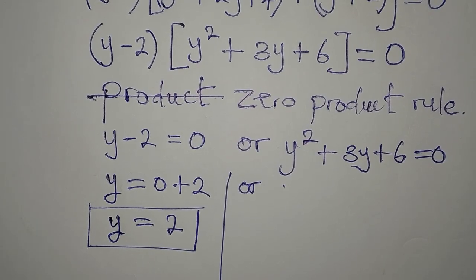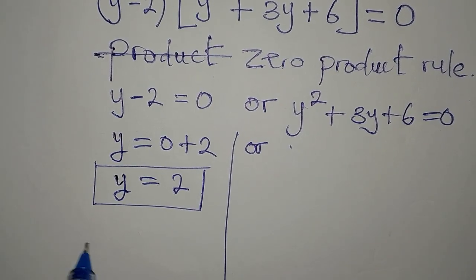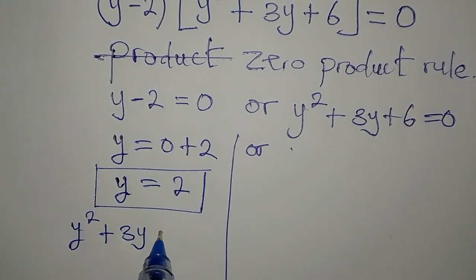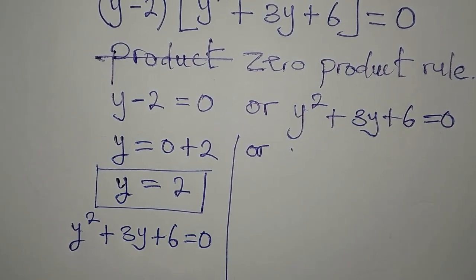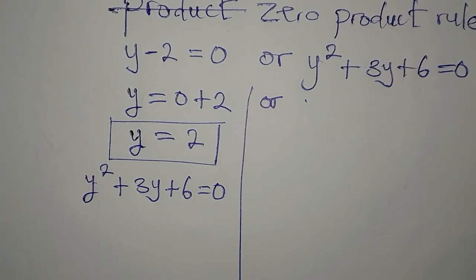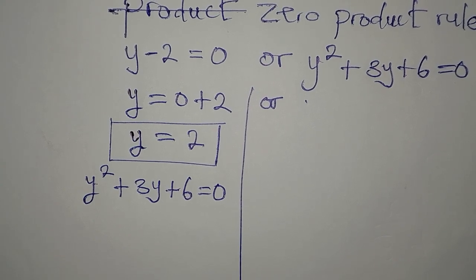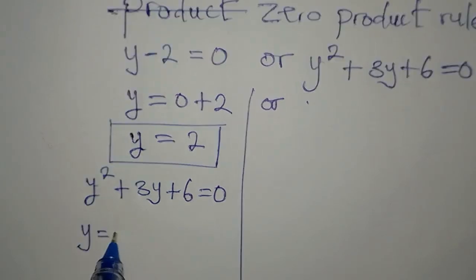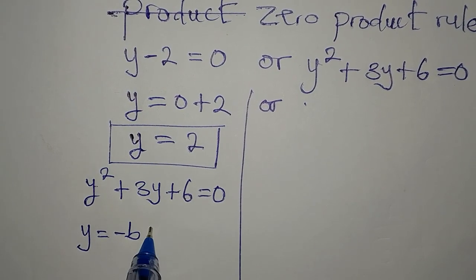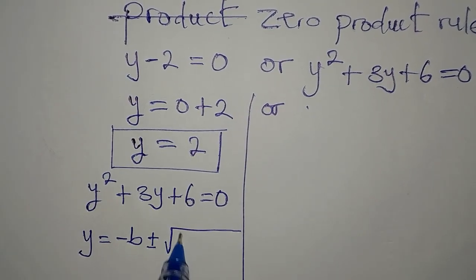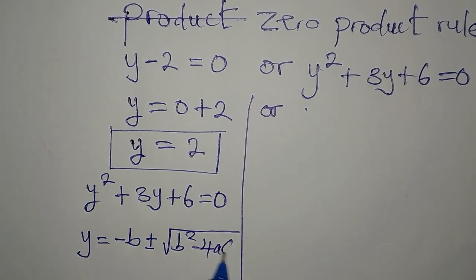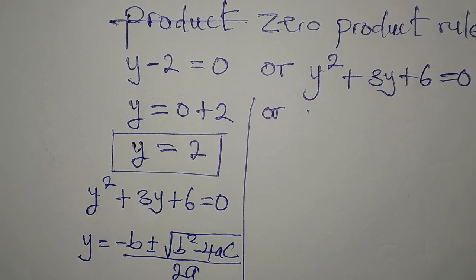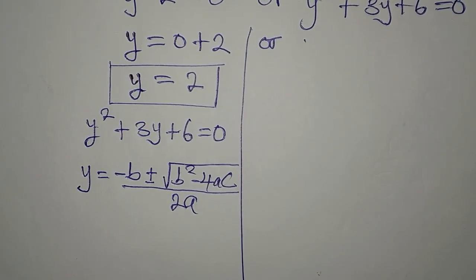To get the other solutions, we take the quadratic equation y² + 3y + 6 = 0 and apply the quadratic formula: y equals negative b plus or minus the square root of b² minus 4ac, all divided by 2a.